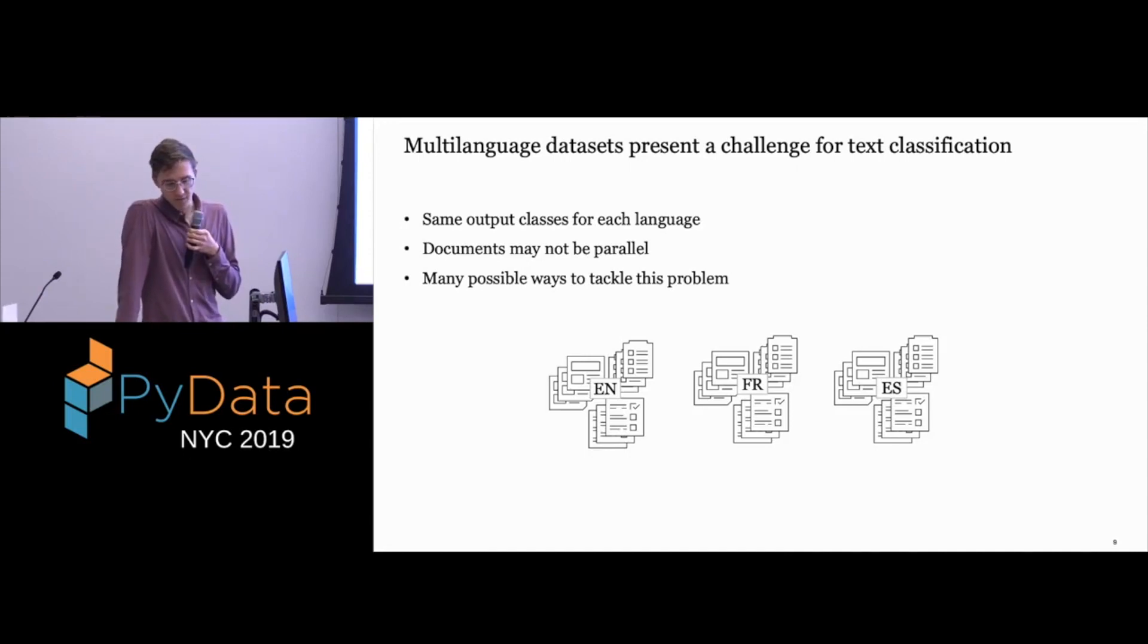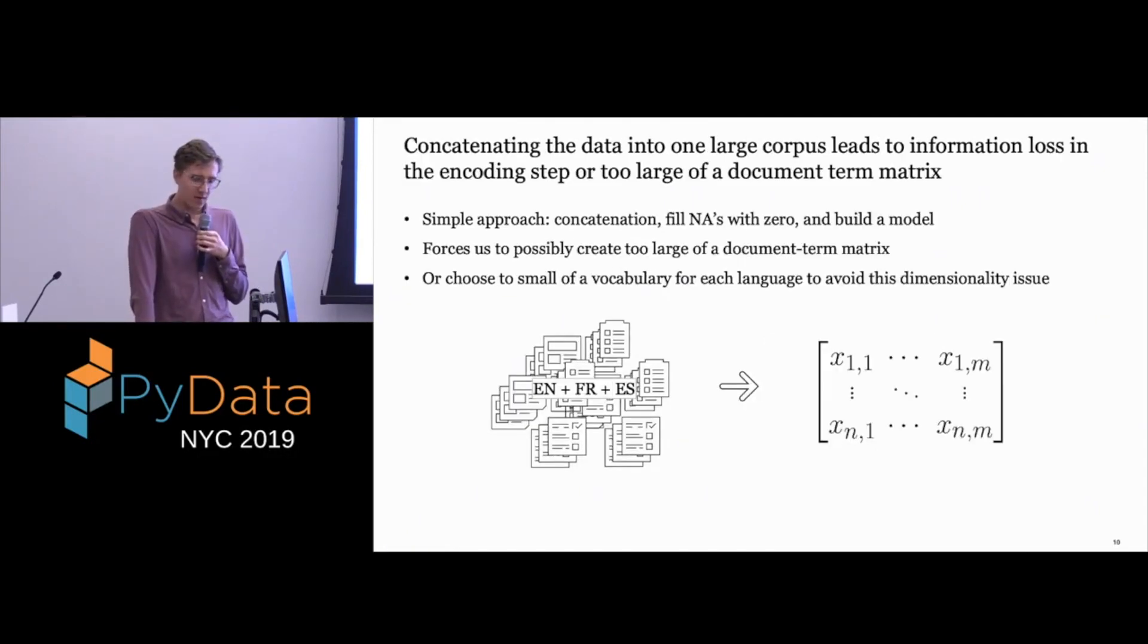There are lots of ways that we can tackle this problem. Let's look at some very naive ways first. What if we just concatenated them all and then filled NAs with zeros? This is probably the simplest and maybe first approach that we would all think about. This either forces us to create too large of a document term matrix, but if that's not an issue, maybe we would choose too small of a vocabulary for each language, so we wouldn't capture enough information.